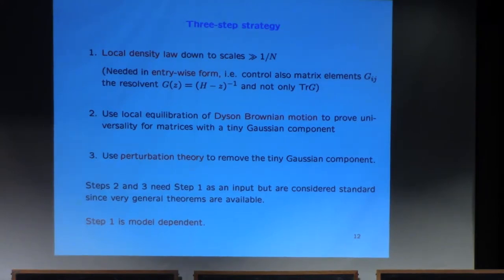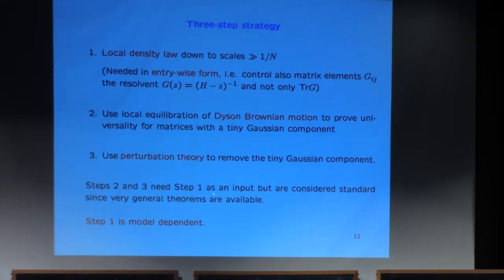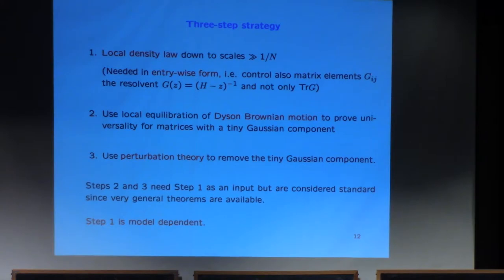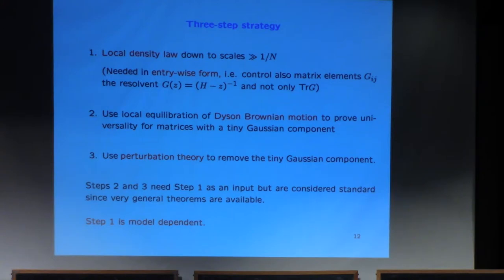Step three is going back: you wanted to prove something about the Wigner matrix with arbitrary distribution, but you proved it for the Wigner matrix plus a tiny Gaussian component. You can remove this Gaussian component by perturbation theory — it's not completely trivial, but in spirit it's a perturbation-theoretic argument. It sounds funny that you added the Gaussian component to get universality and then remove it, but nevertheless this is the way to go.